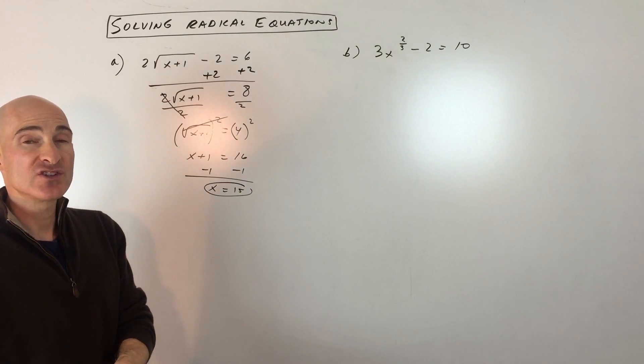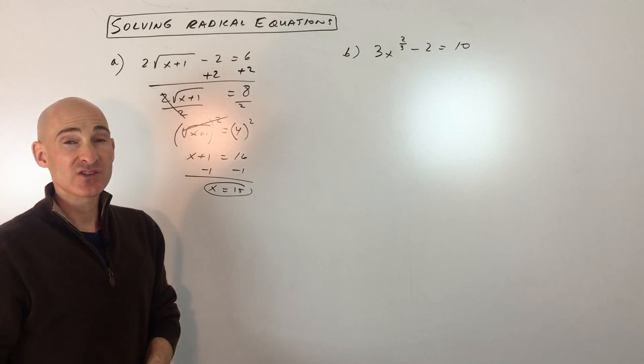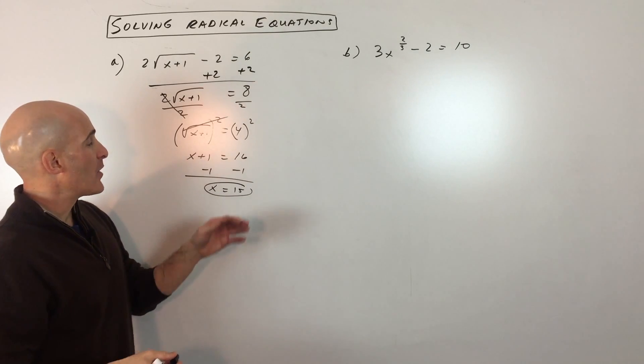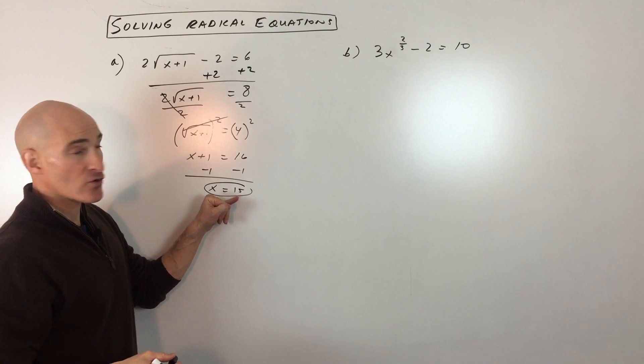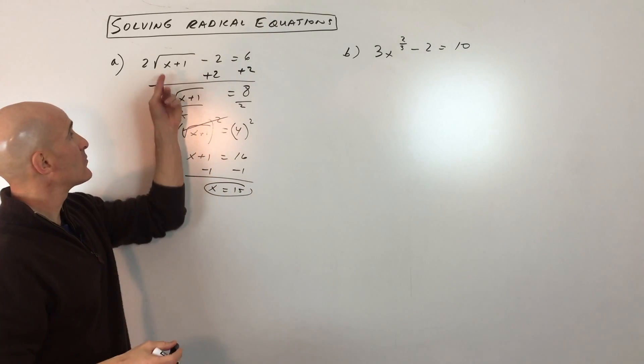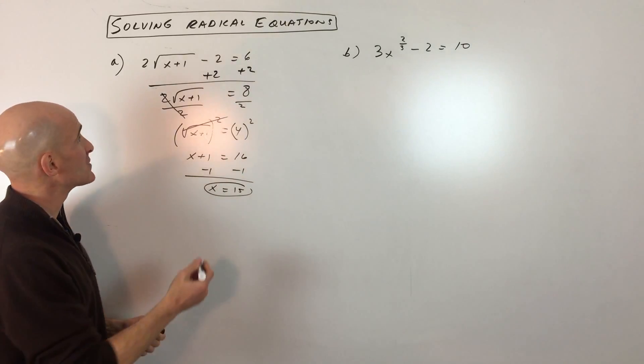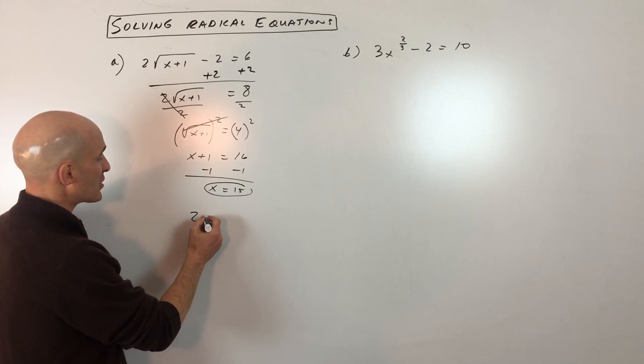When you work with radical equations, sometimes you get what are called extraneous solutions, extraneous roots, false answers, however you want to say it. But what you want to do to make sure that this is actually the correct answer is to take 15, go ahead and put it back into the original equation and make sure that it works. Because sometimes you do get this false answer, so you have to check your answer.